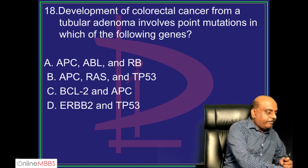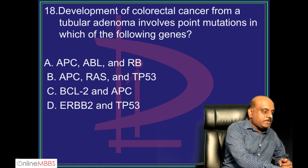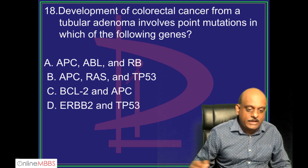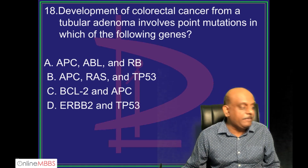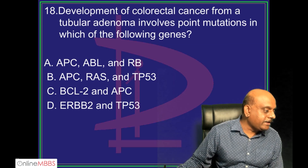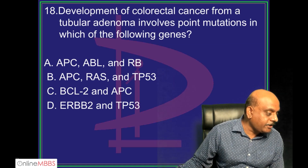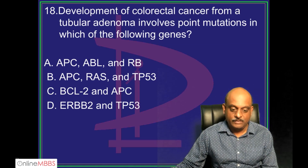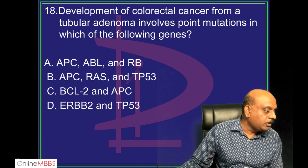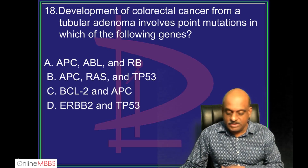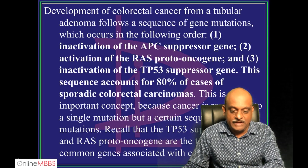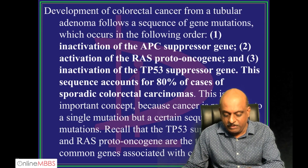Wake up and answer the questions. Roshan is proposing APC, RAS, and TP53. What are others' answers? Sathya also thinks the same. Very good. Any other answers? Lawrence thinks the same. APC, RAS, and TP53 is what you should remember.